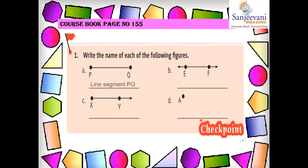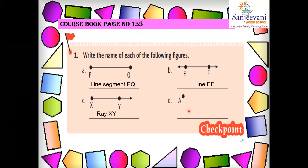Page 155: write the name of each of the following figures. The first one is a line segment — line segment PQ. The second one has arrows so it is line EF. The third is ray XY. And the last is point E. Now you can just pause the video and write down the answers in your course book.